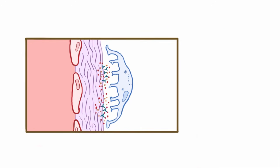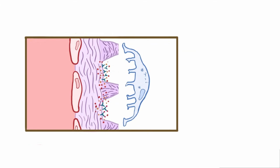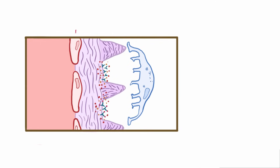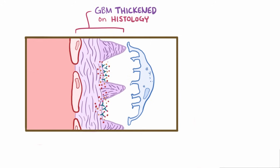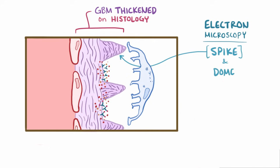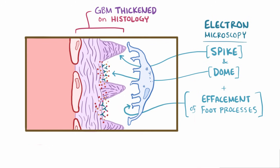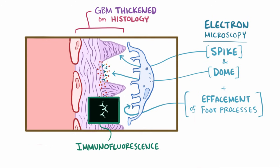Over time, as a reaction to the immune deposits, GBM matrix is deposited in between the immune complexes, which makes the GBM appear thickened on histology. But if you take a closer look on electron microscopy, you'll see that this pattern of GBM matrix on the subepithelial deposits creates a characteristic spike-and-dome pattern, and you'll also see effacement or flattening of the foot processes of the podocytes. Finally, on immunofluorescence, you'll see deposits of immune complexes, which appear granular or sort of sprinkled throughout the GBM.